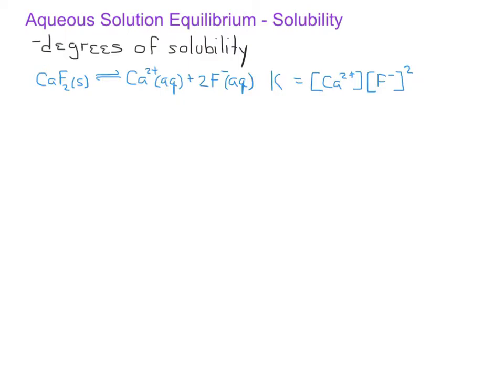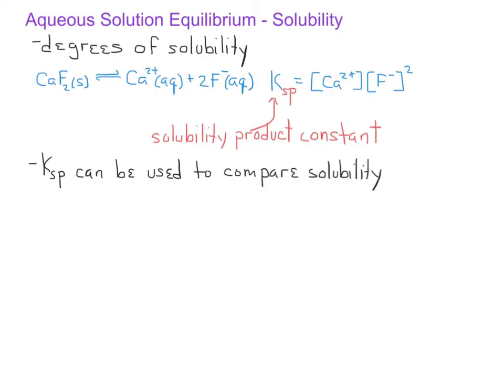However, in this case, we'll introduce a new subscript for this equilibrium constant. We'll use the subscript sp, and we'll call this new equilibrium constant the solubility product constant. The solubility product constant can be used as a way to determine the relative solubilities of different ionic compounds in water. Generally, for ionic compounds that have the same type of formula, the larger the Ksp value, the more soluble the compound will be.